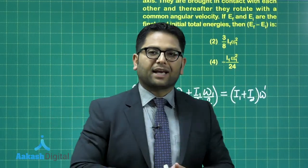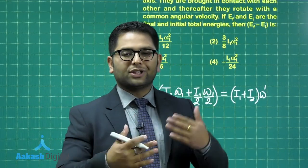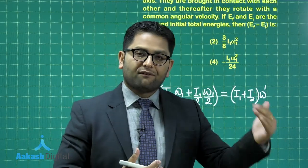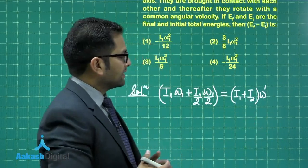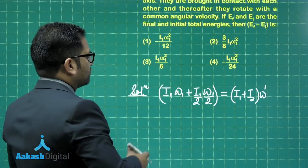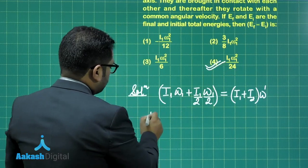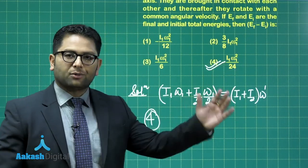So, you know the initial angular velocity, you know the final angular velocity, and kinetic energy can be calculated, which is half Iω². So, all you need to do is that you find the difference between the final total kinetic energy and the initial kinetic energy. You solve it, you would land up with option number 4. So, option number 4 is the correct option of question number 1.